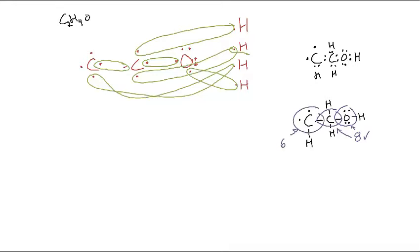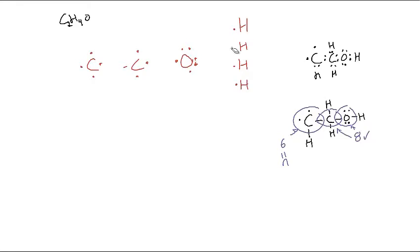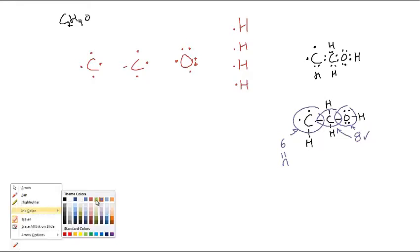Uh-oh, this carbon though only has six. So that's not right. It means I have to go back. Let's erase some of this stuff. Something did not work right. I have to make a double bond somewhere. Let's try again.